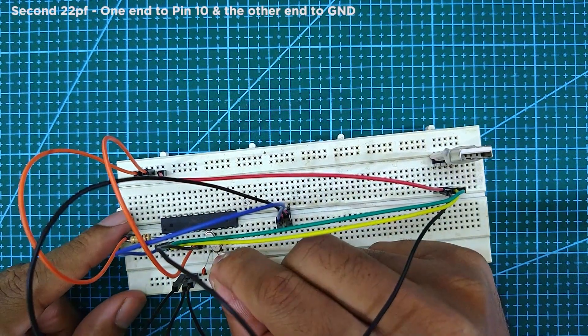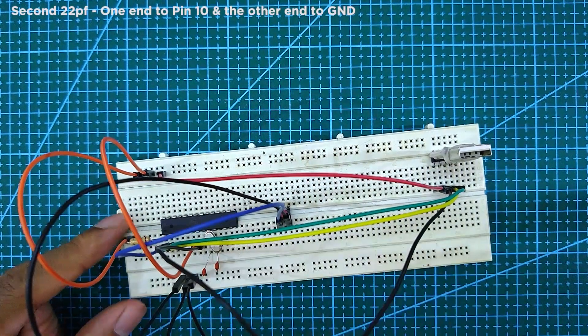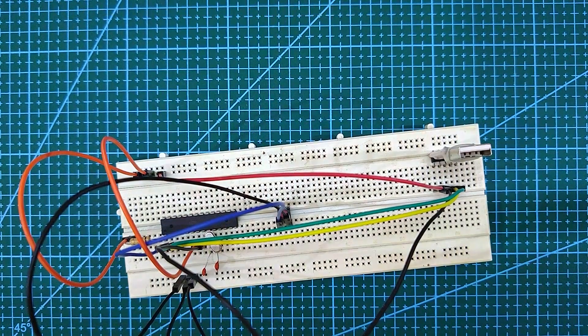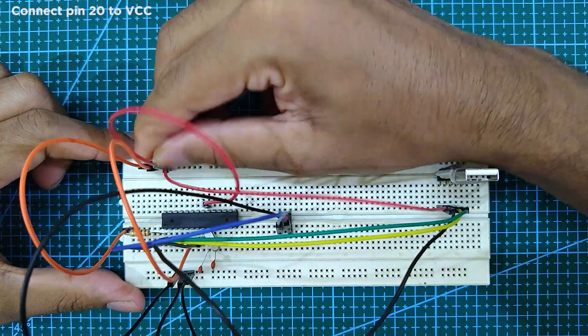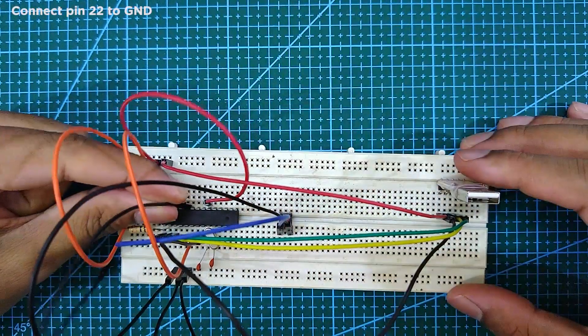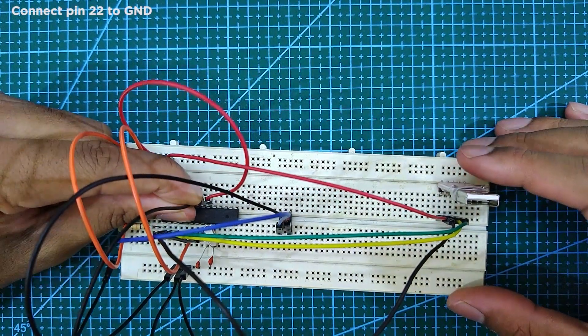Next, connect pin 20 to VCC and pin 22 to ground.